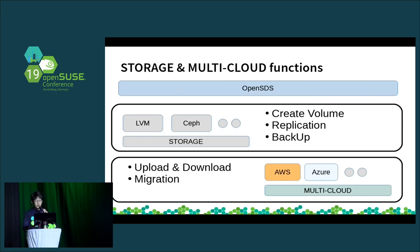Let's see the functions. About storage, OpenSDS can create volumes, attach volumes, take snapshots, do replication, and delete. About multi-cloud, it can use buckets and migration. Each function only does one thing — that is small power. But OpenSDS aims for an autonomous data platform, meaning each function cooperates with each other.